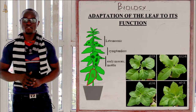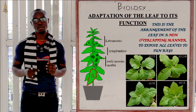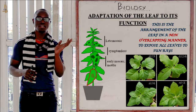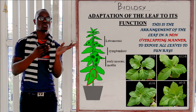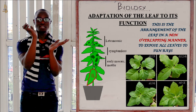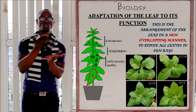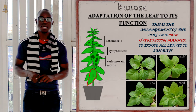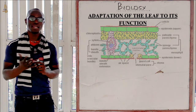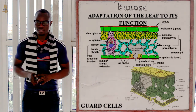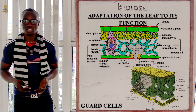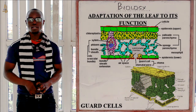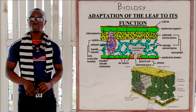Then we have leaf mosaic. Leaf mosaic simply means that there is no leaf overlapping over another — each leaf is exposed to sunlight on its own, so no leaf is on top of another to prevent it from absorbing sunlight. Lastly, the leaf has guard cells which control the opening and closing of the stomata.